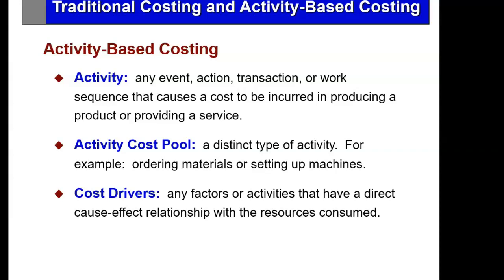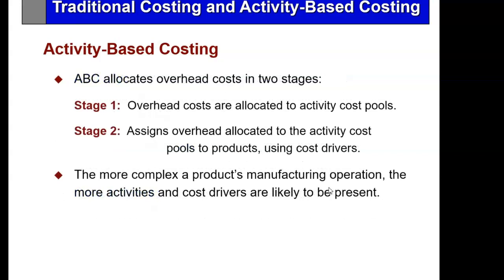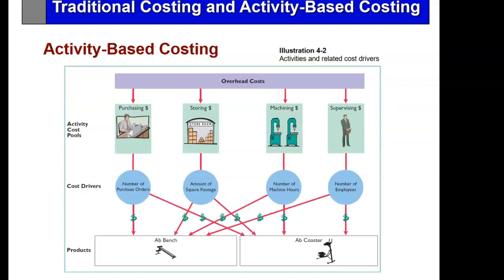A cost driver is any activity that has a direct cause-and-effect relationship with the resources consumed in that pool. We take the overhead — say a million — and break it into pools: 200,000 for machine costs, 200,000 for supervisory costs, 200,000 for utilities, and so on. Instead of one million-dollar pool, we now have three or four pools. The philosophy is to allocate overhead to products in two steps: first assign costs to activity cost pools, then assign pool costs to products using cost drivers.